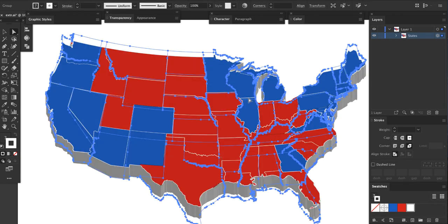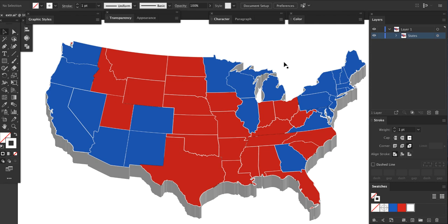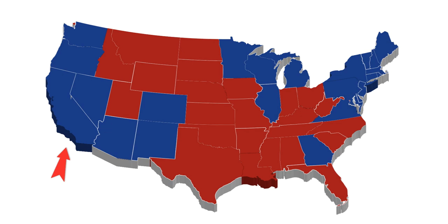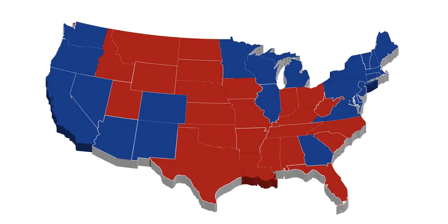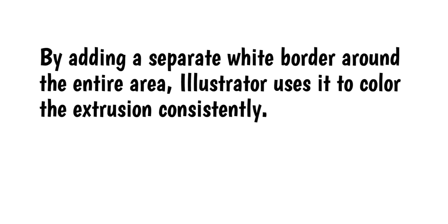Eventually it will finish and you'll see this. Pretty cool. I could have done the extrusion without adding the separate white border around the whole area, but notice that the extrusion from California, Louisiana, and Long Island are different colors. This is because the color of the extrusion is based on the border colors of the shapes being extruded. Even though all of the states have a white border, this doesn't come through all of the time. By adding a separate white border around the entire area, Illustrator uses it to color the extrusion consistently.